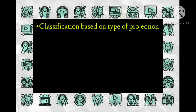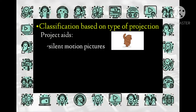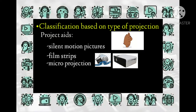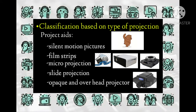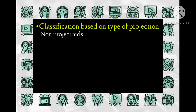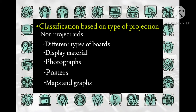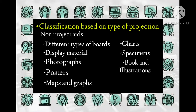Classification based on type of projection: projected aids include silent motion pictures, film strips, magic lanterns, microprojection, slide projection, opaque and overhead projectors. Non-projected aids include different types of boards, display materials, photographs, posters, maps, graphs, charts, specimens, books, and illustrations.